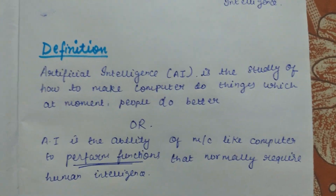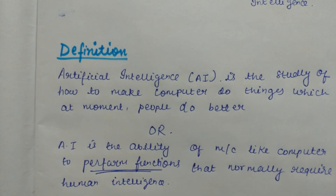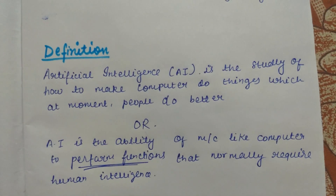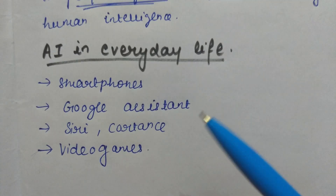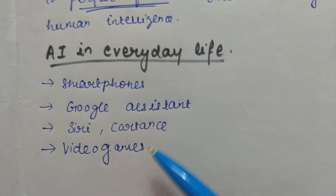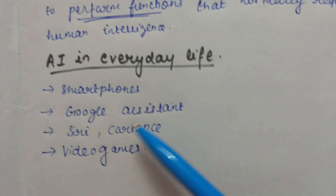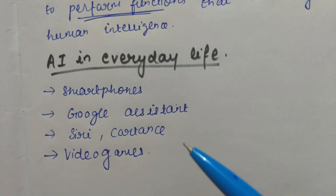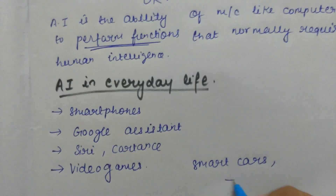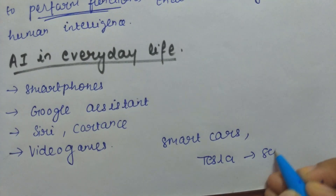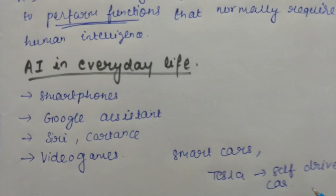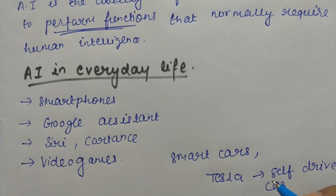These are the definitions you can write in your examination to score good marks. Now let's see the functions of AI. Some everyday life examples of AI are our smartphones, Google Assistant, Siri, Cortana, and video games. One example that may not come across in everyday life is smart cars. You may have heard the name Tesla, which is a self-driving car used in various countries — it is one of the major examples of AI.